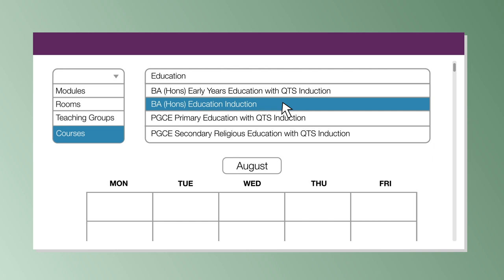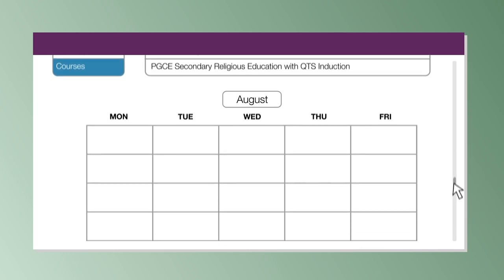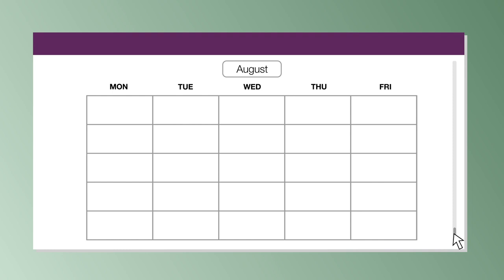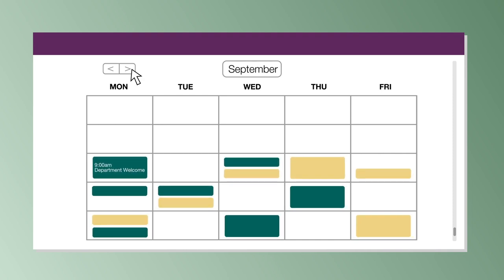Induction timetables are separate from your semester timetables, so it's important to find and select the correct one. Once selected, you can use the arrows to scroll through the calendar to your start date to see your induction sessions. If you use the link provided in your emails, it will take you directly to this point.